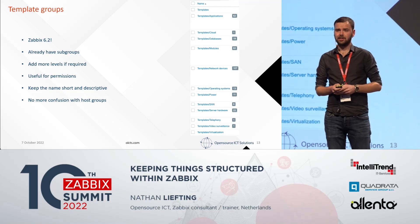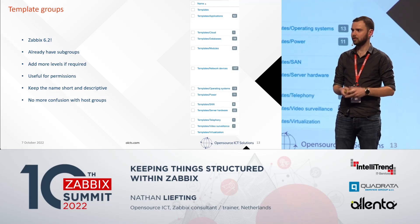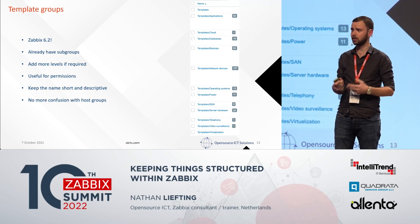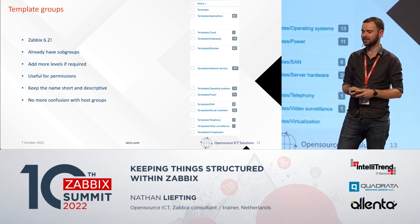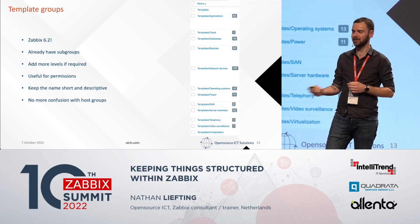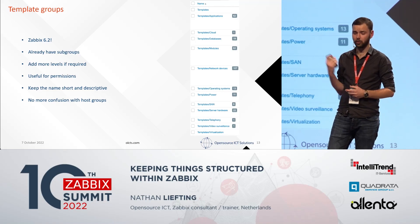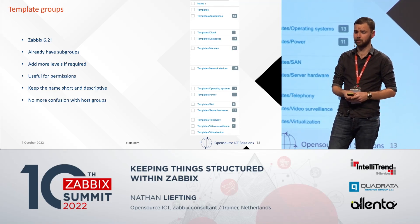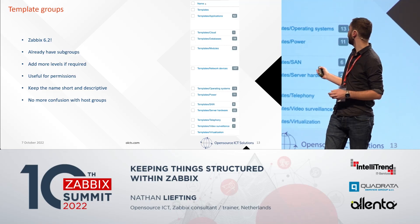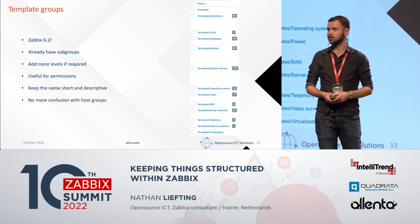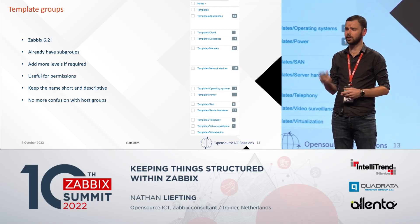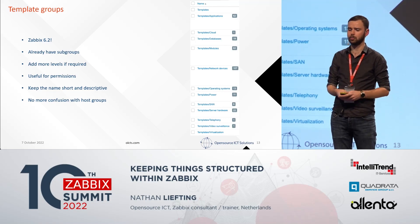New to Zabbix 6.2 is template groups — finally, they are split up. We now have separate host groups and separate template groups. No longer do we have to explain to our users the confusion of templates belonging in certain host groups. They already have subgroups set up so you can find all templates belonging to the main 'Templates' group with appropriate subgroups for different kinds. Useful for permissions as well. Same principles apply as with host groups: keep the name short, keep it descriptive, and use those subgroups to your advantage.